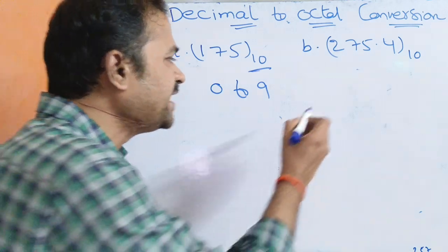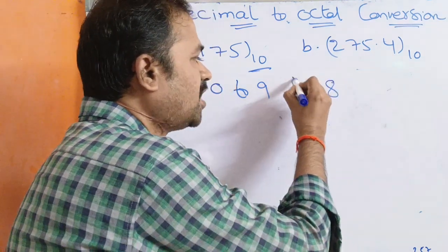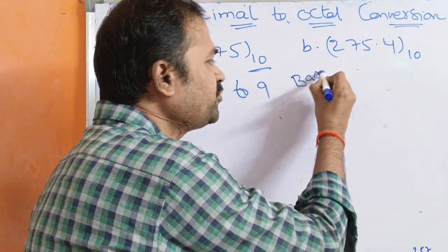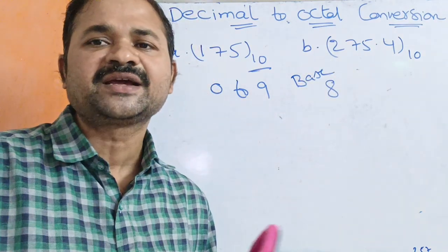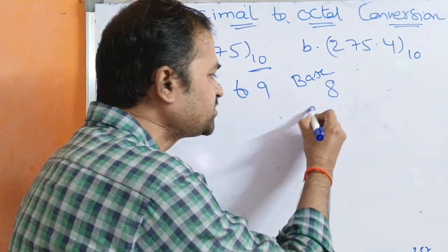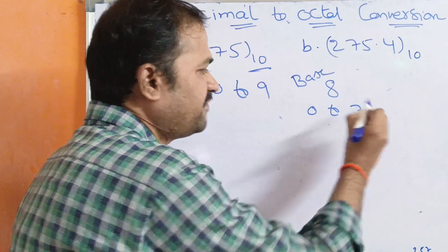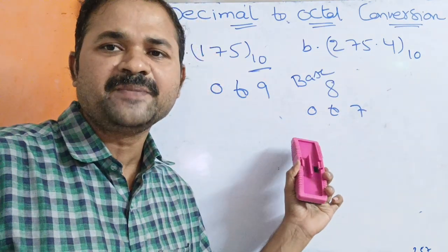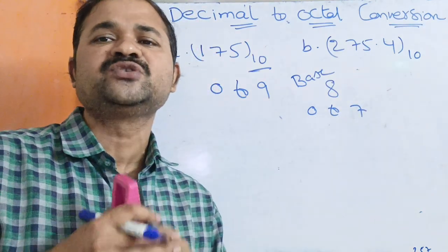Octal means the base value is 8. An octal number contains a combination of symbols from 0 to 7, so an octal number may contain symbols from 0 to 7.